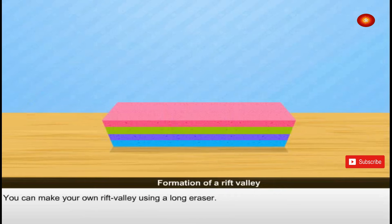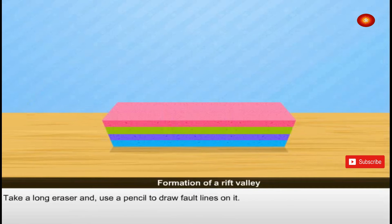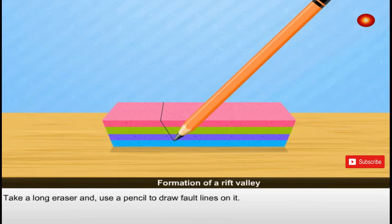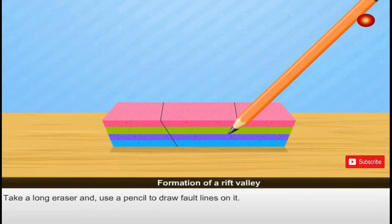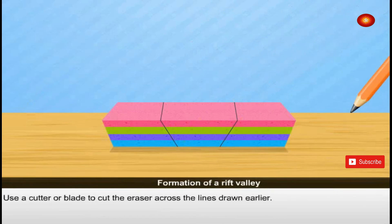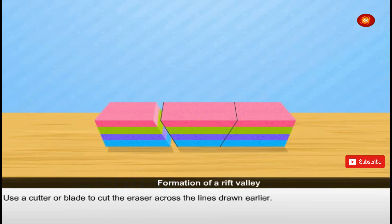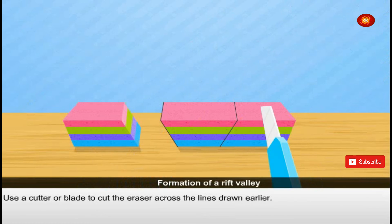You can make your own rift valley using a long eraser. Take a long eraser and use a pencil to draw fault lines on it. Then use a cutter or blade to cut the eraser across the lines drawn earlier.